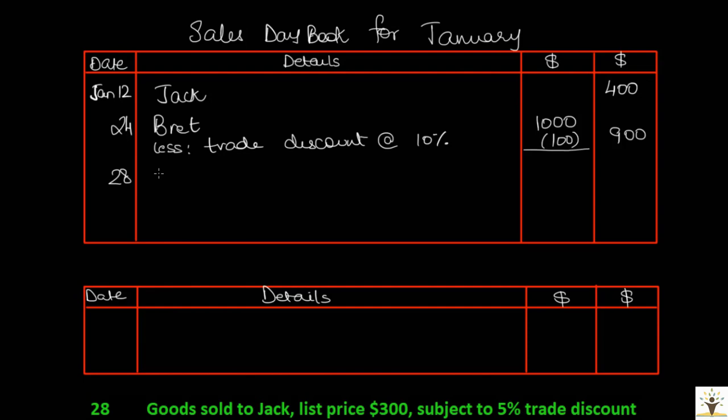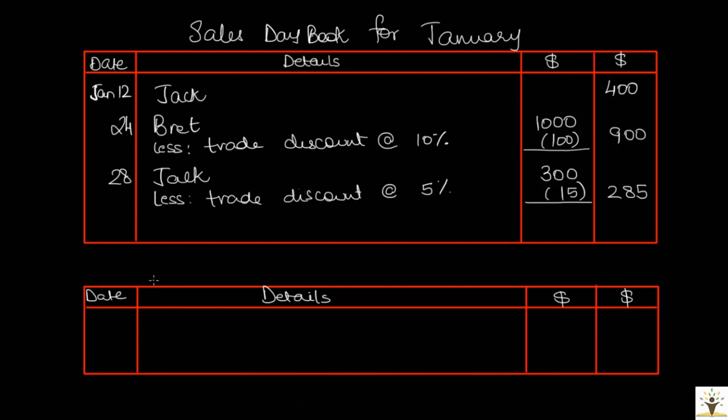On Jan 28, goods were sold to Jack at a list price of $300, subject to trade discount at 5%. Date Jan 28, details Jack, list price $300 in the working column, less trade discount at 5% = $15, and the net amount in the final column is $285.